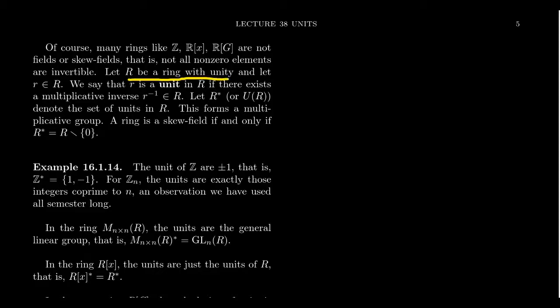If R is a ring with unity — because without unity there's no reason to talk about reciprocals — and we take some element little r inside of R, we say that little r is a unit if there exists some multiplicative inverse, that is, the ring contains some r to the negative one. The set of all units inside a ring with unity is often denoted R-star, sometimes U of R.